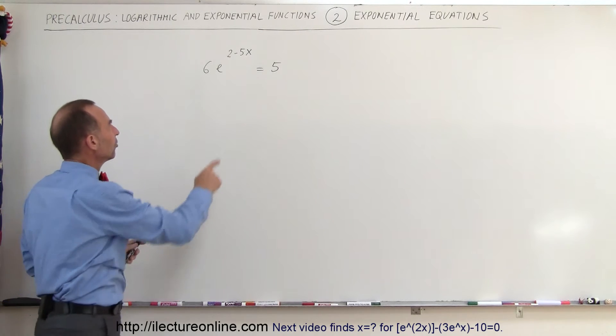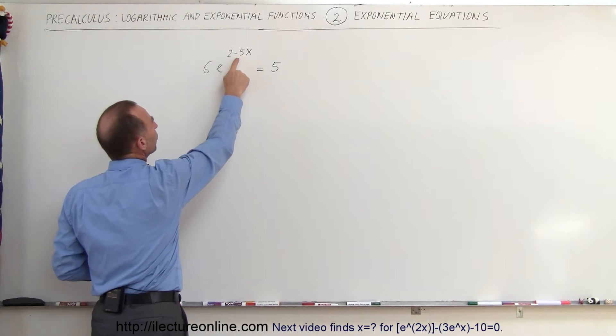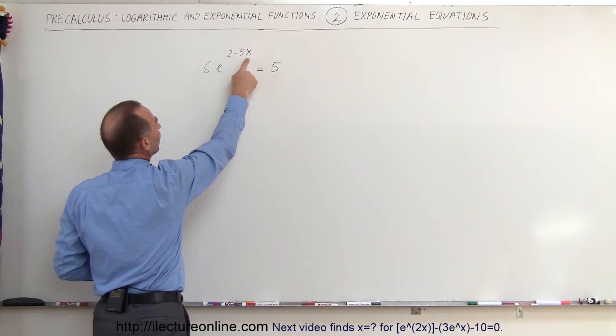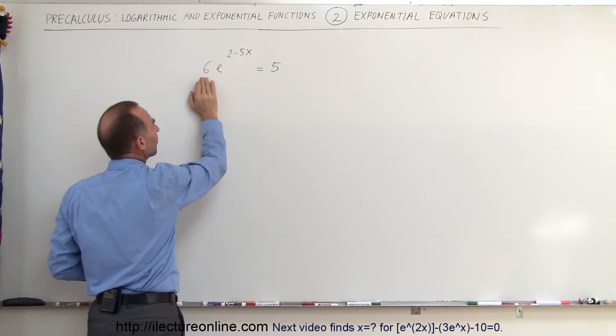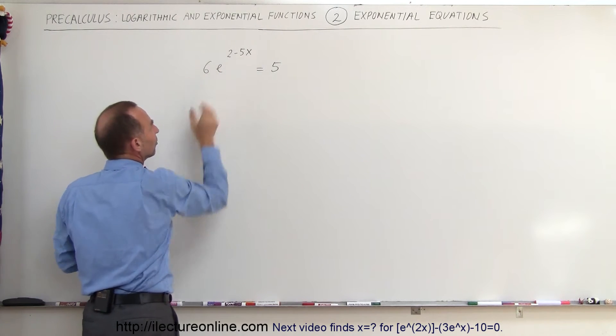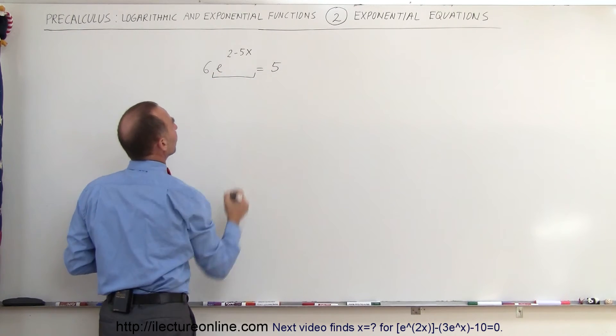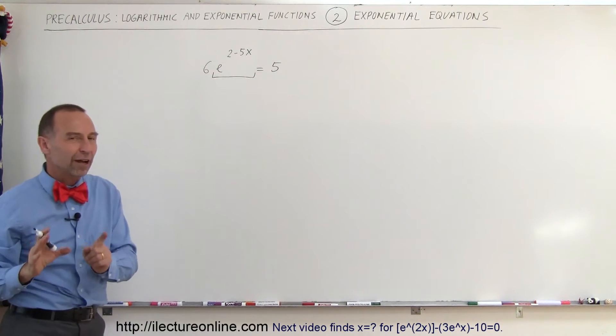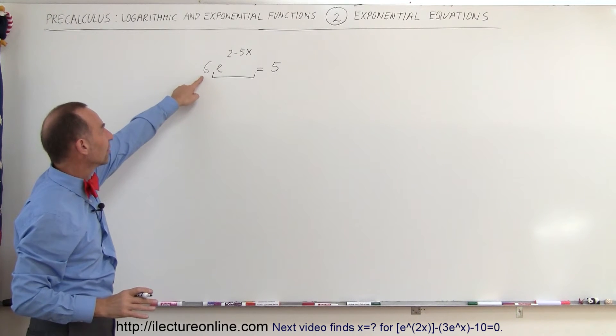But here we have to be careful because e raised to the 2 minus 5x exponent is multiplied times 6. We first have to isolate this portion of the equation before we take the natural log of both sides, which means we have to divide both sides by the coefficient 6.